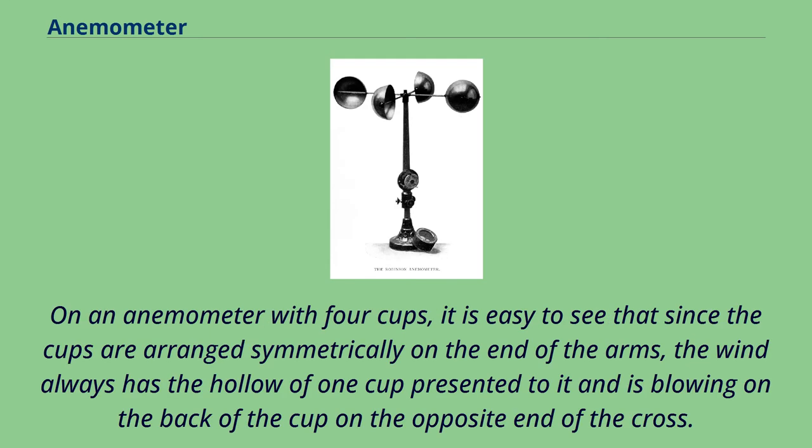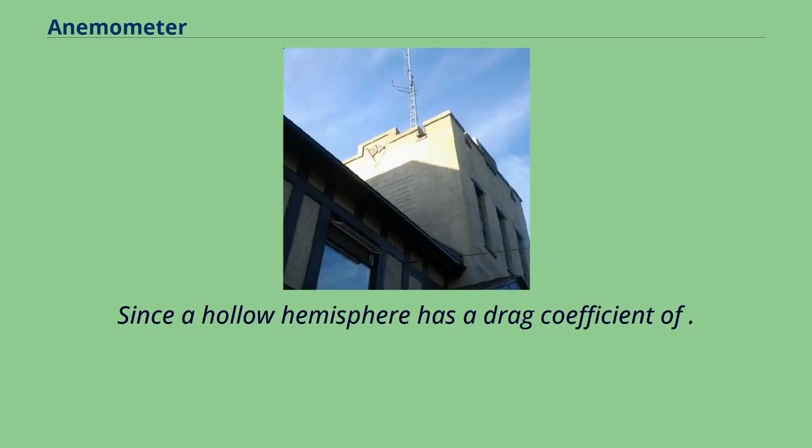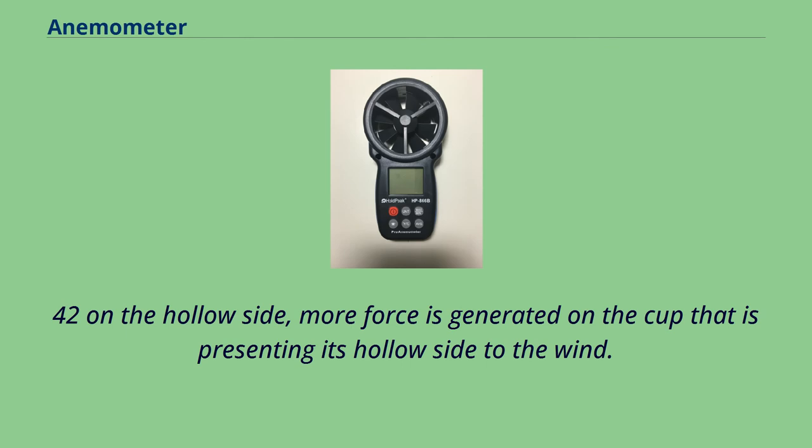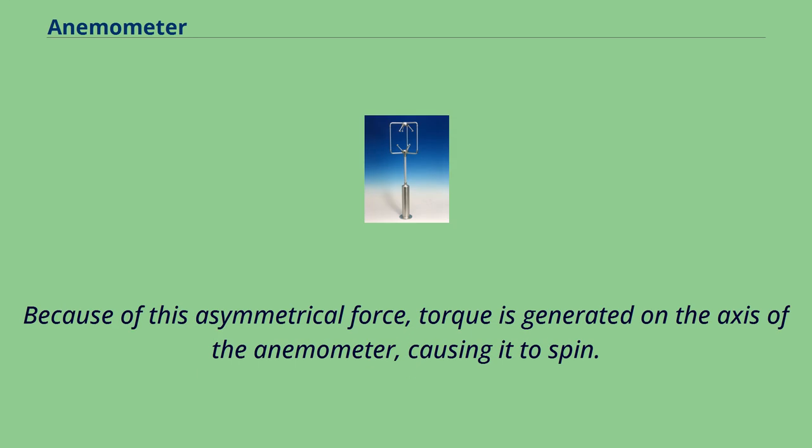On an anemometer with four cups, it is easy to see that since the cups are arranged symmetrically on the end of the arms, the wind always has the hollow of one cup presented to it and is blowing on the back of the cup on the opposite end of the cross. Since a hollow hemisphere has a drag coefficient of 0.38 on the spherical side and 1.42 on the hollow side, more force is generated on the cup that is presenting its hollow side to the wind. Because of this asymmetrical force, torque is generated on the axis of the anemometer, causing it to spin.